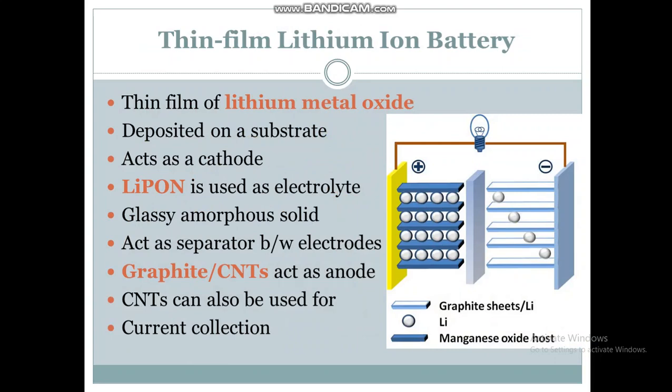Thin film batteries. An example of a thin film battery is the lithium ion battery. A thin film of lithium metal oxide can be deposited on a substrate which acts as a cathode. Lithium phosphorus oxynitride is used as the electrolyte, which is a glassy amorphous solid, and it also acts as a separator between the two electrodes. Graphite or carbon nanotubes can be used as the anode, and carbon nanotubes can also be used for current collection.